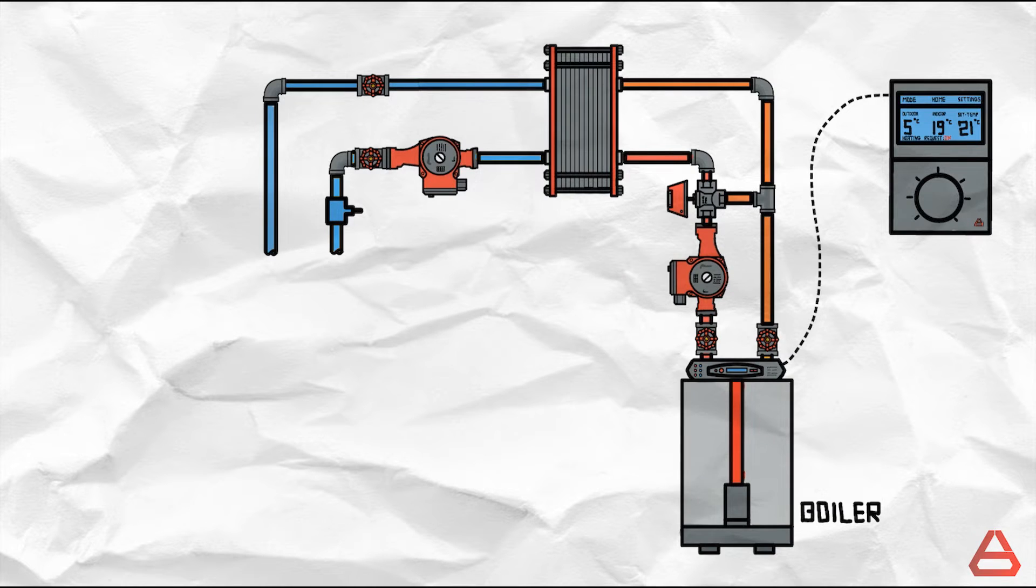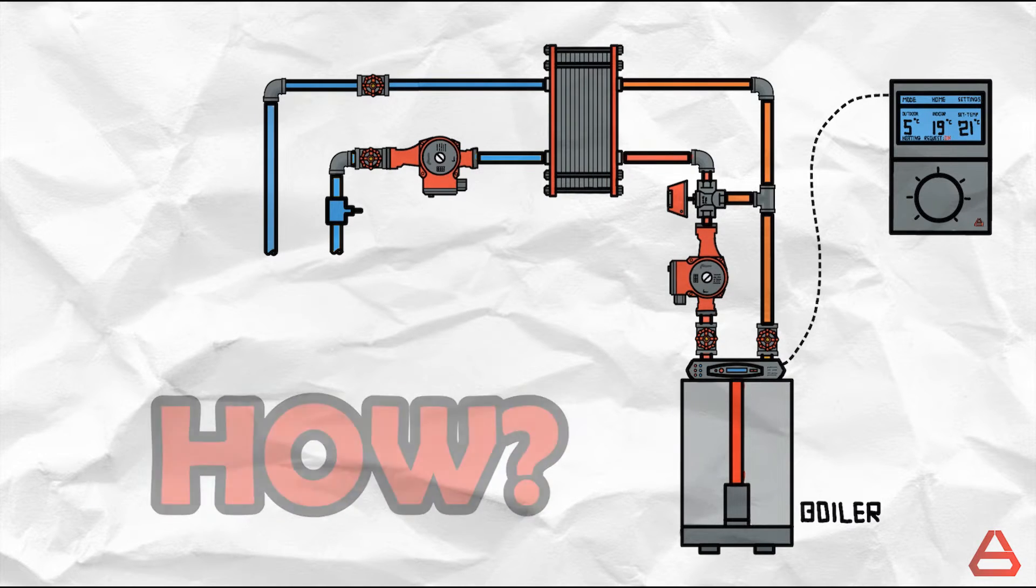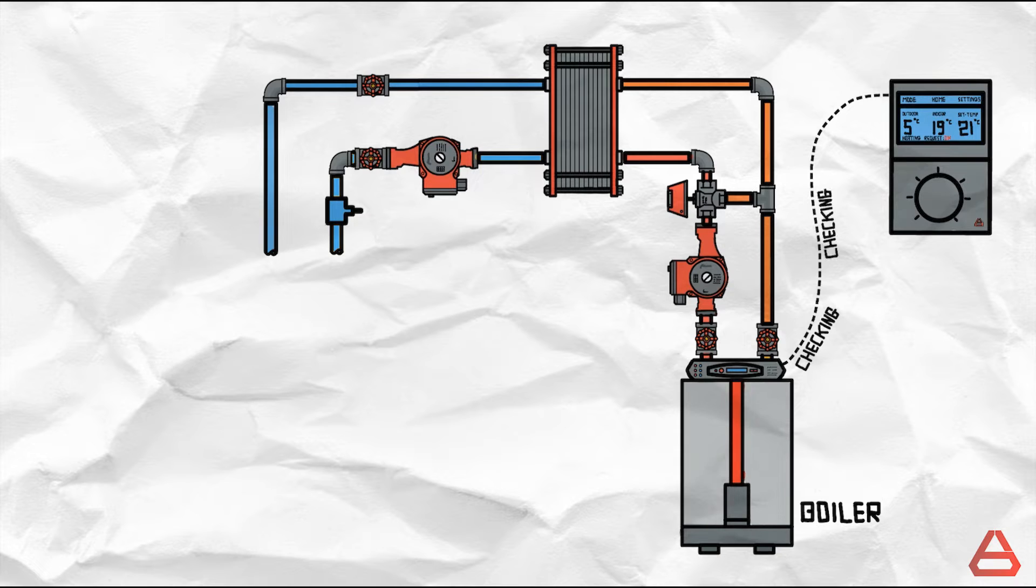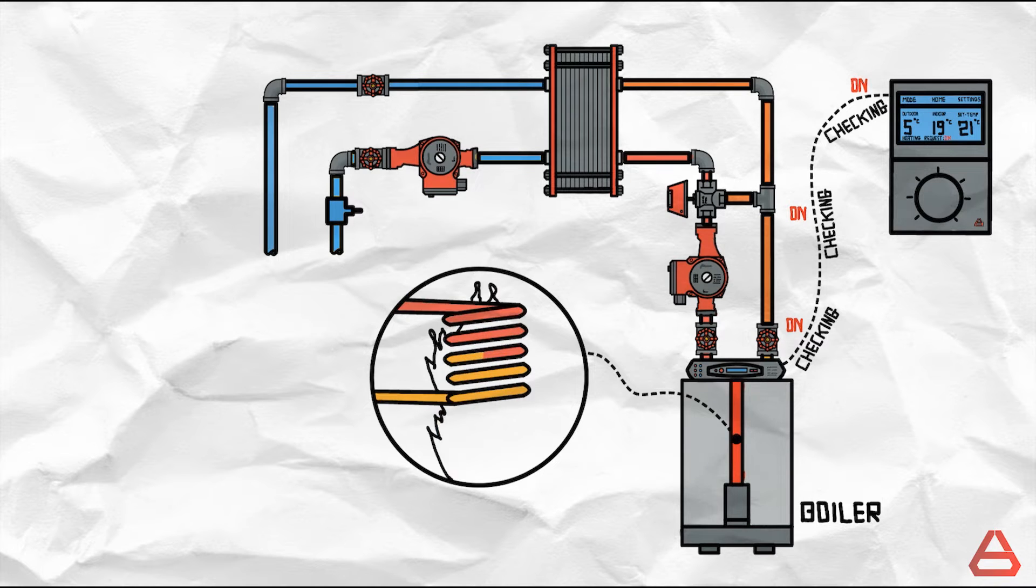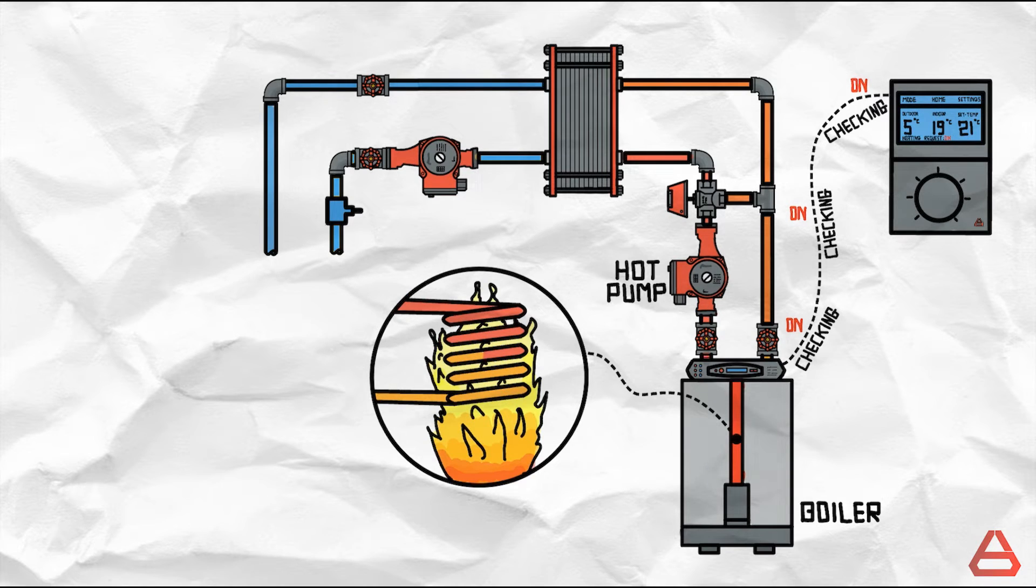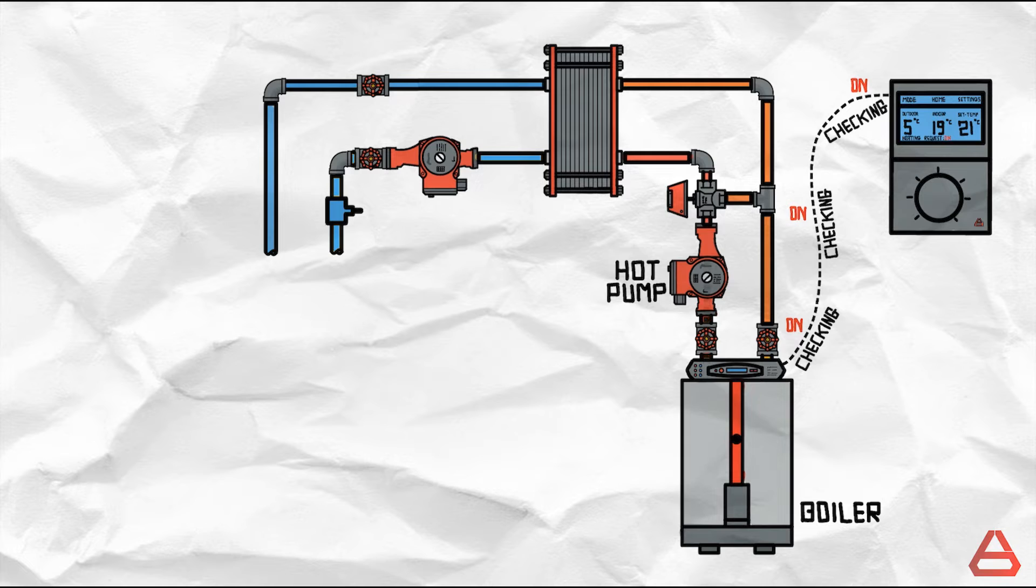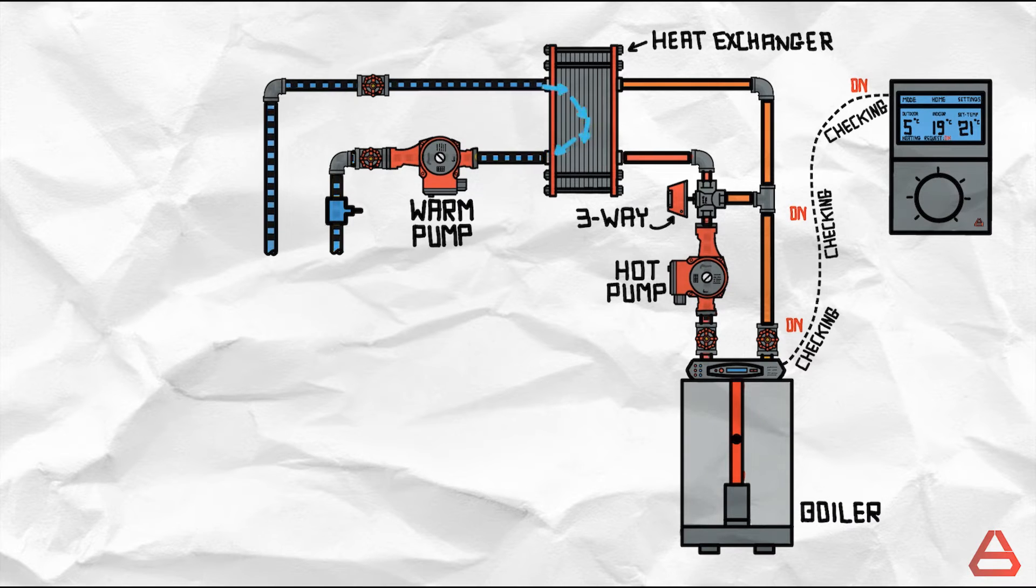So as we did for the heating circuit let's check out how this subsystem operates. The boiler begins by checking for a demand for heating that can be triggered by any of the room thermostats. If triggered it will ignite and begin heating the water while the hot pump is running and circulating the water. The water reaches the three way valve. At the same time the warm pump, still cold at the moment, is also running and circulating water through the heat exchanger and the warm circuit.